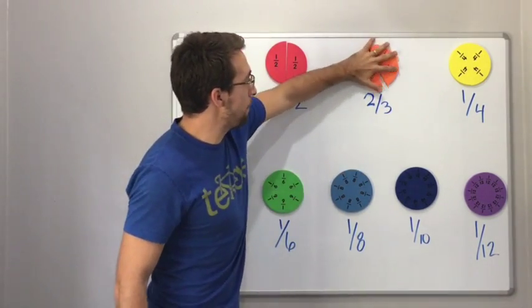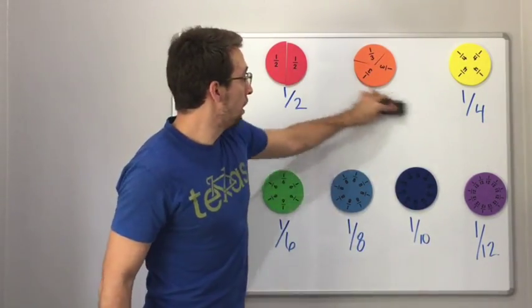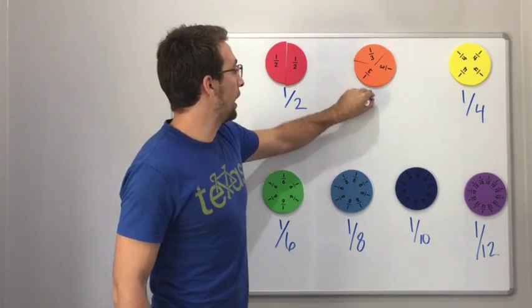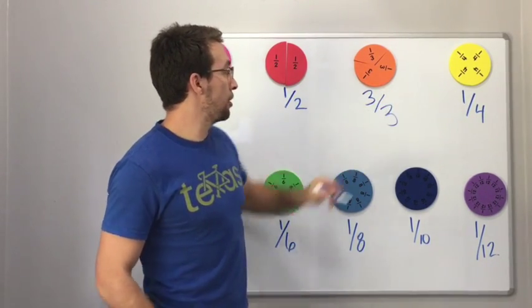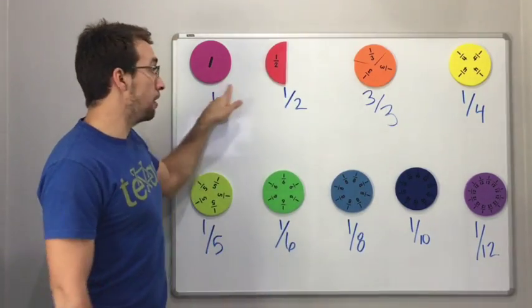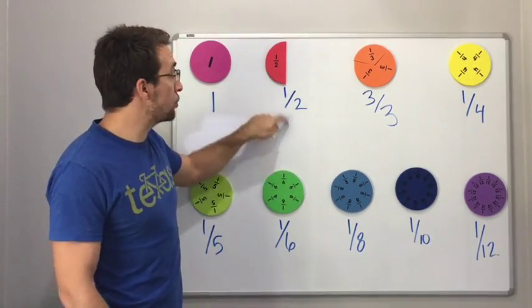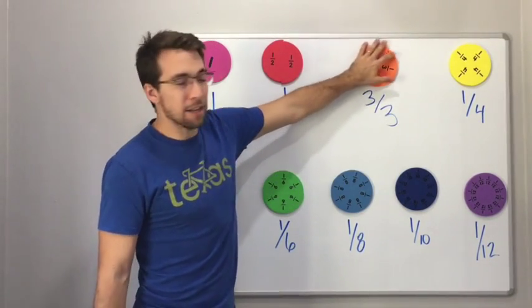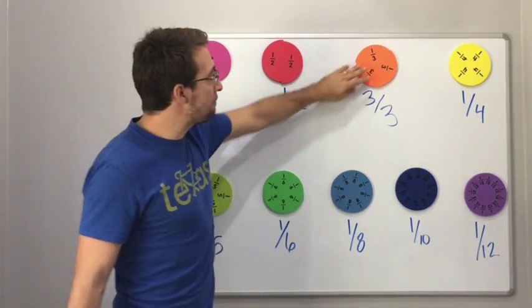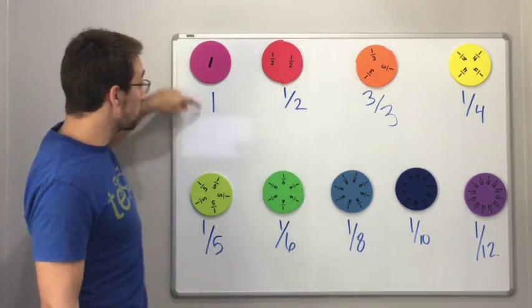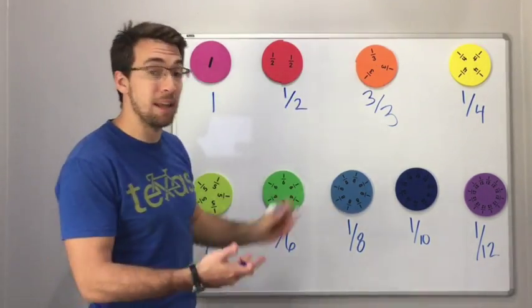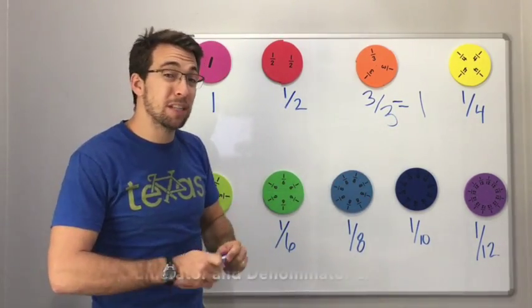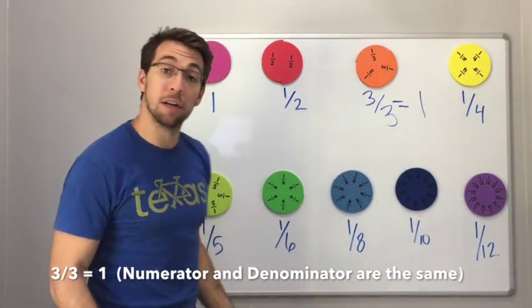And so, if we have the full circle, how many pieces out of three do we have? We have three thirds. Here we have one half, one out of two. Here we have three out of three. And what does three out of three mean? We have the full circle. So three out of three equals one. That's it. If your numerator is the same number as your denominator, equals one.